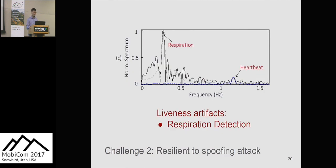The second challenge is making the system secure and robust against spoofing. Our anti-spoofing strategy is called liveness artifact detection. As shown in the frequency spectrum, CardiacScan captures not only heart rate but also respiration rate. Since respiration and heartbeat occupy different frequency bands, the system can detect replay attacks because spoofed signals typically contain no respiration component, allowing the system to detect and reject them.